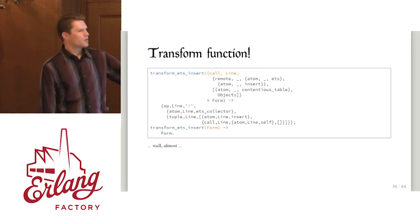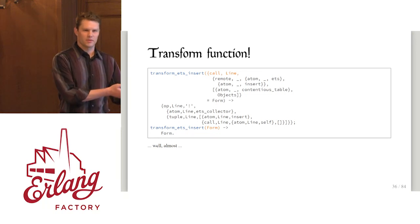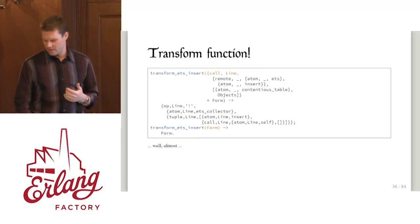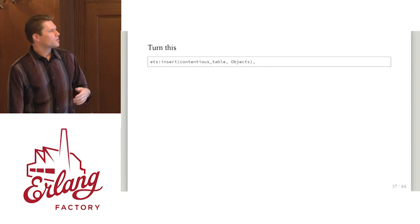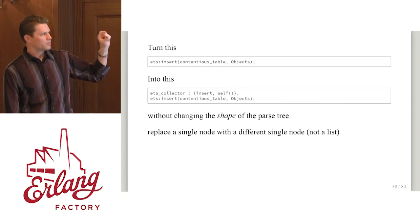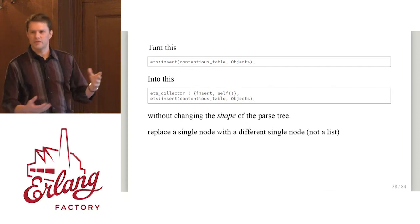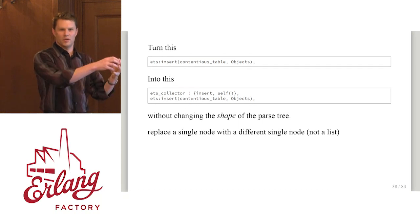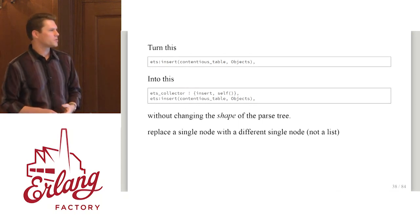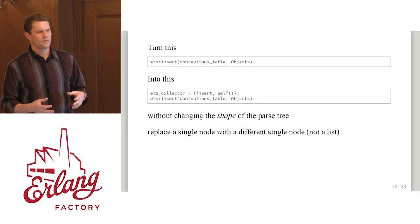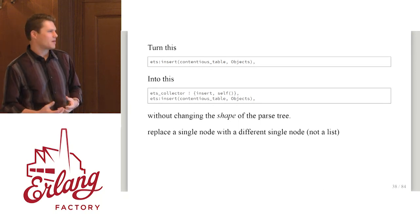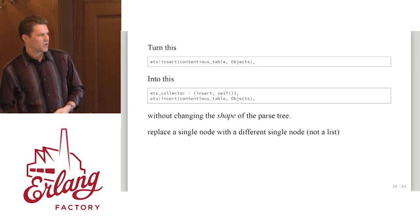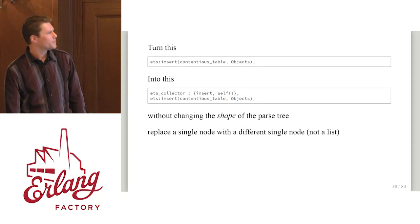There are a couple of problems. We've completely clobbered the original ets:insert code and just replaced it — we haven't added anything. We want to turn this into two different expressions, but we don't want to change the shape of the parse tree. We're taking one node out and we want to put one node back. Otherwise we've got to get a lot more information about the shape of the tree and rebuild it much more carefully, which becomes extremely difficult.